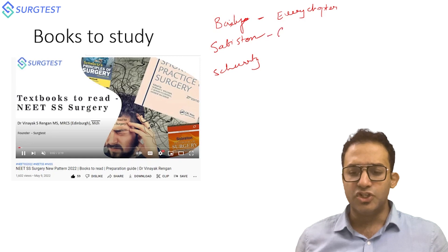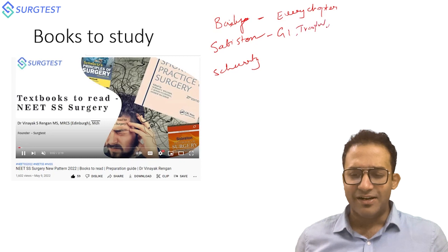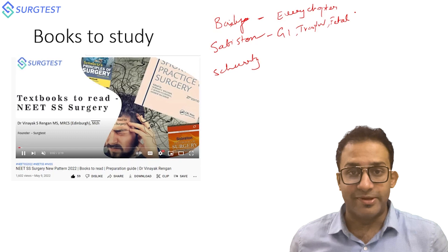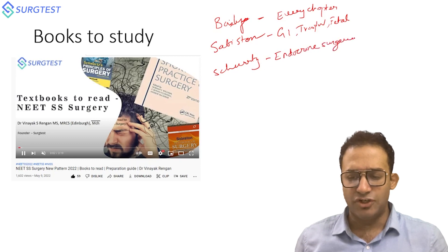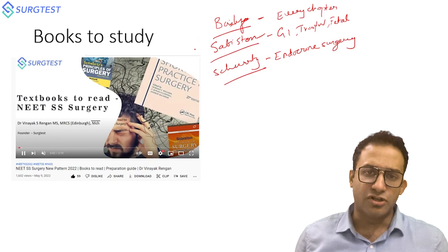Sabiston - GI surgery is the most important part, then a few new chapters such as transplant, fetal surgery. Schwartz - endocrine surgery is the most important topic. So these three books form the basis of your preparation: Bailey in full, selected topics from Sabiston and Schwartz.